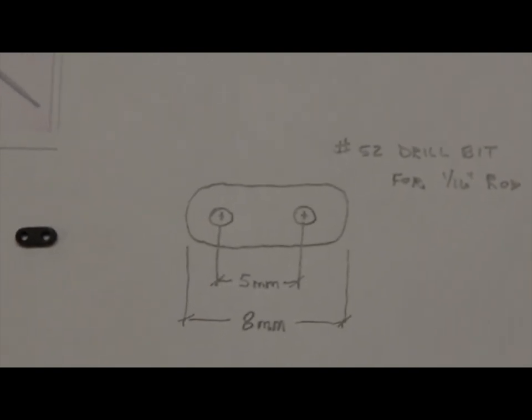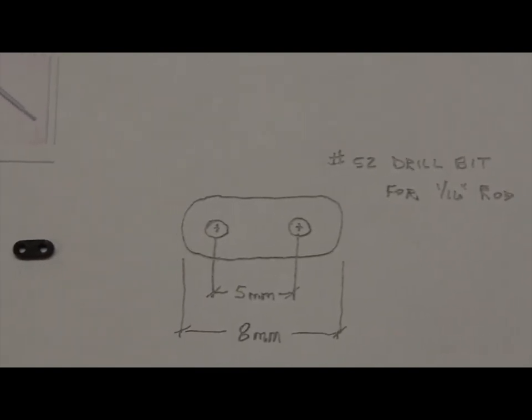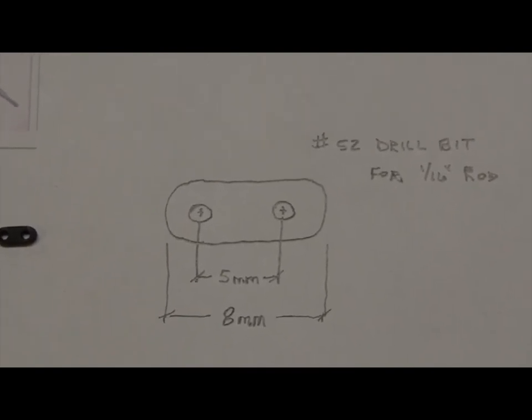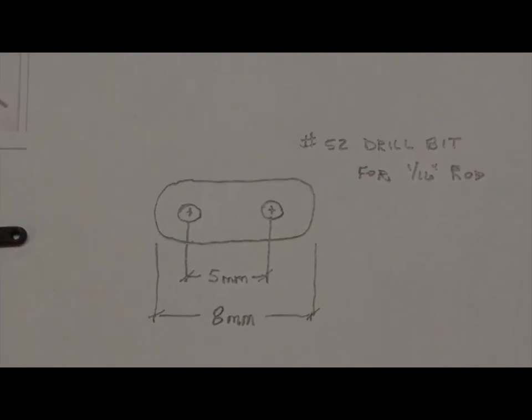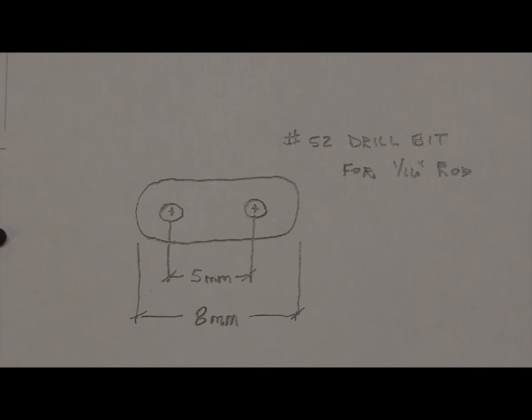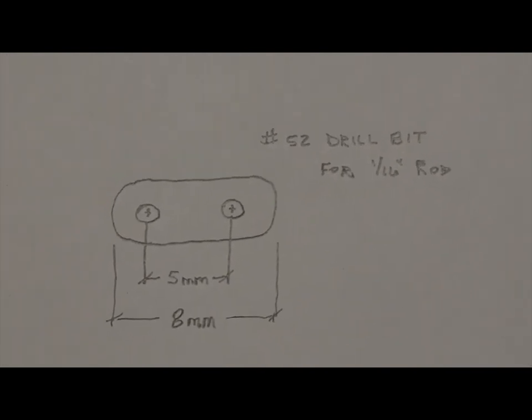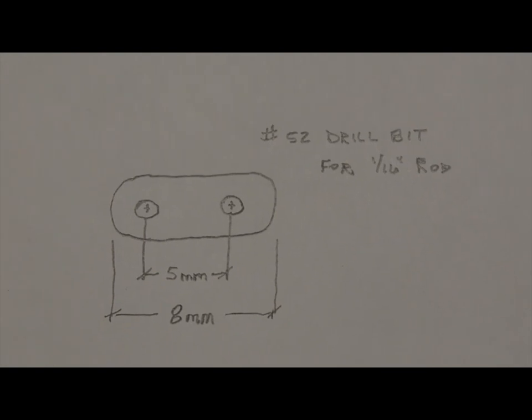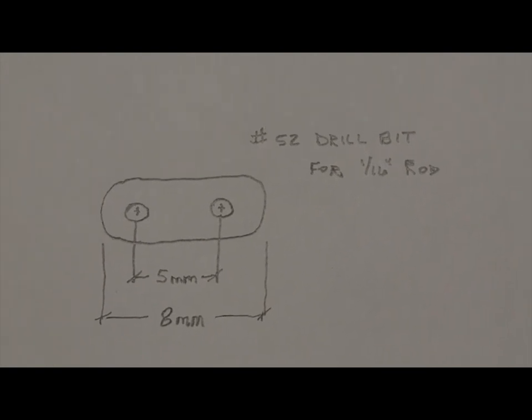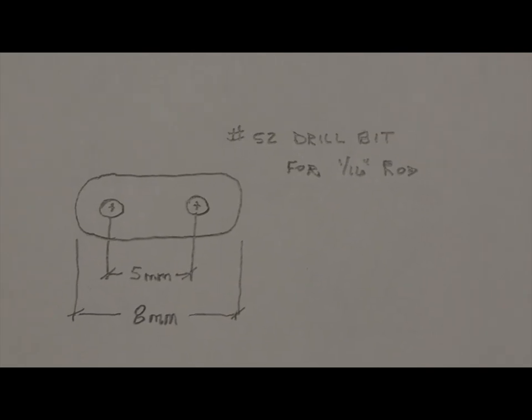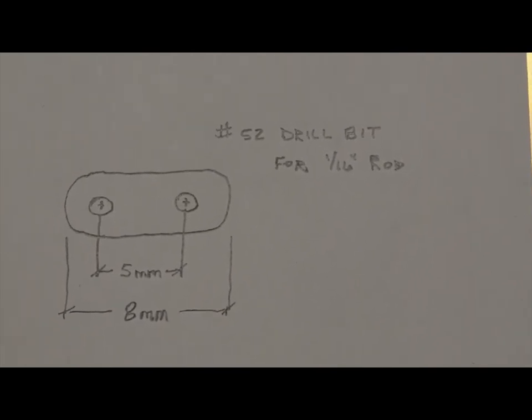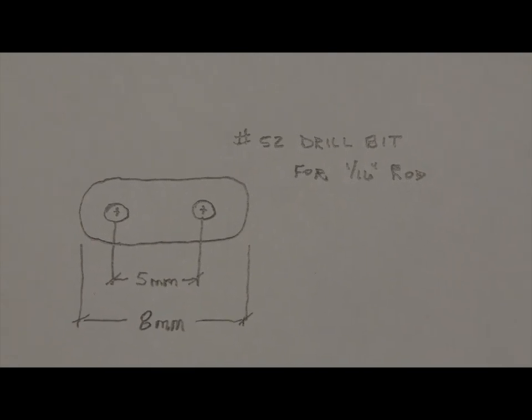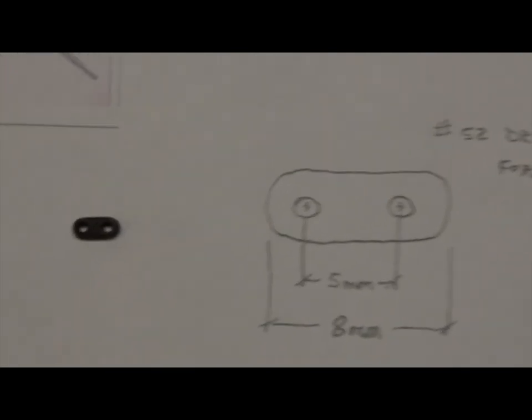And we're going to make one that's going to look like this. You can see I've got some measurements on here, five millimeters center to center on the holes. And that's about as tight as you can get it because these two magnetos have to fit next to each other. And then of course I'm using a number 52 drill bit based on the 1/16th rod that we used earlier. Now I'm showing this to be 8 millimeters across. Yours will vary I'm sure. You just want this thing to be as small as possible.